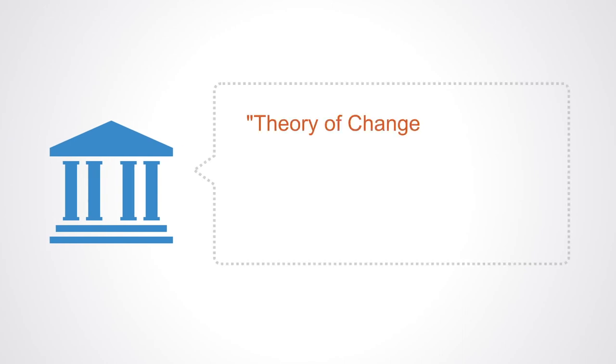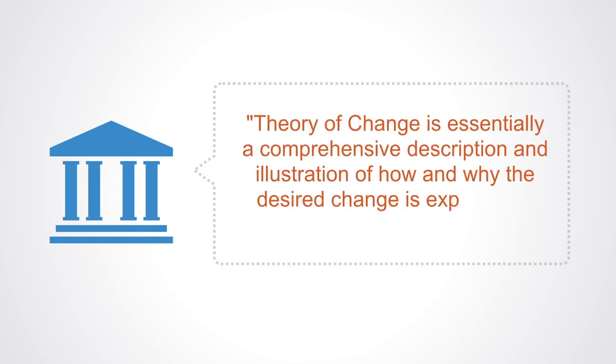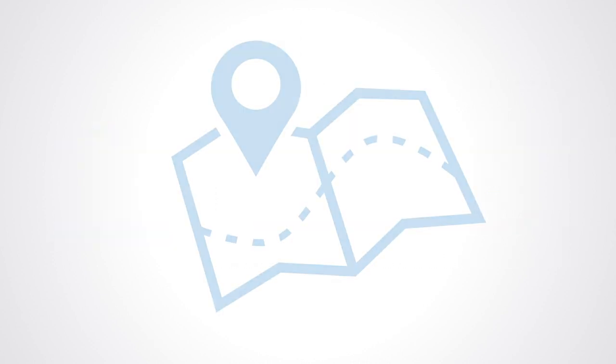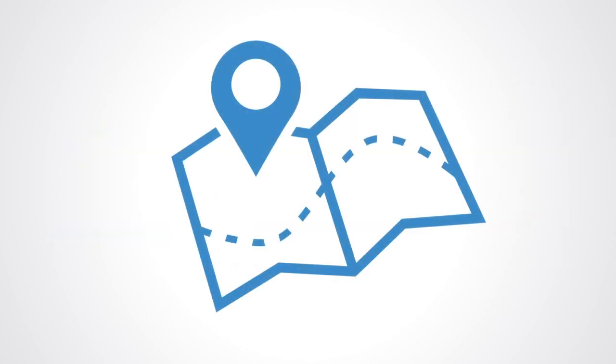The Center for Theory of Change tells us that a theory of change is essentially a comprehensive description and illustration of how and why the desired change is expected to happen in a particular context. Quite simply, theories of change are the essential plan as to how we are going to get from where we are to where we want to be.